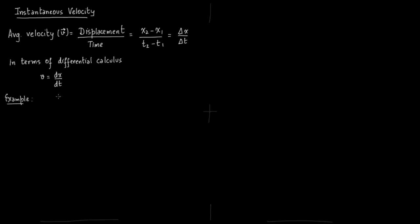Let us consider an example. Say distance is changing as a function of time, so x is equal to a plus bt squared. What is the corresponding instantaneous velocity? Velocity V is equal to dx/dt, which is d/dt of (a plus bt squared).